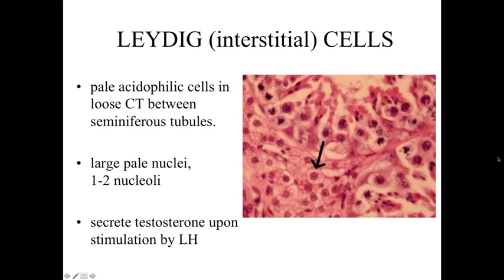Outside of the seminiferous epithelium, in the connective tissue between the tubules, we see interstitial cells often referred to as Leydig cells. These are relatively pale, slightly acidophilic cells with large nuclei and one to two nucleoli. They respond to luteinizing hormone secreted by the pituitary gland and secrete testosterone, which is important because it stimulates the development and activity of all other cells in the testes, the accessory duct systems, and the accessory glands.